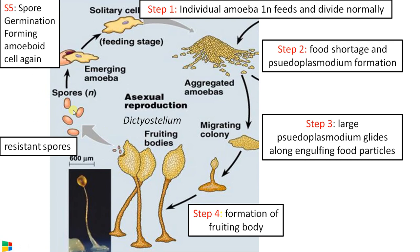Step 6: on return of favorable conditions, these spores germinate again forming amoeboid cells, thus completing the life cycle. This is the most common method of reproduction in cellular slime mold and it is asexual reproduction.